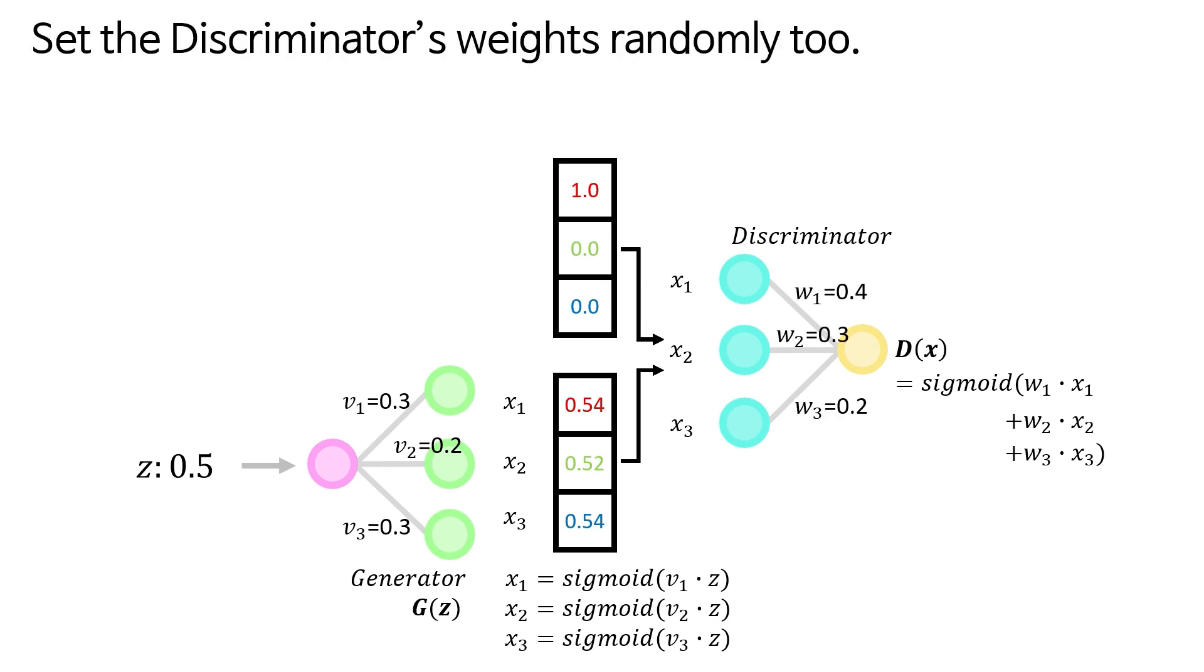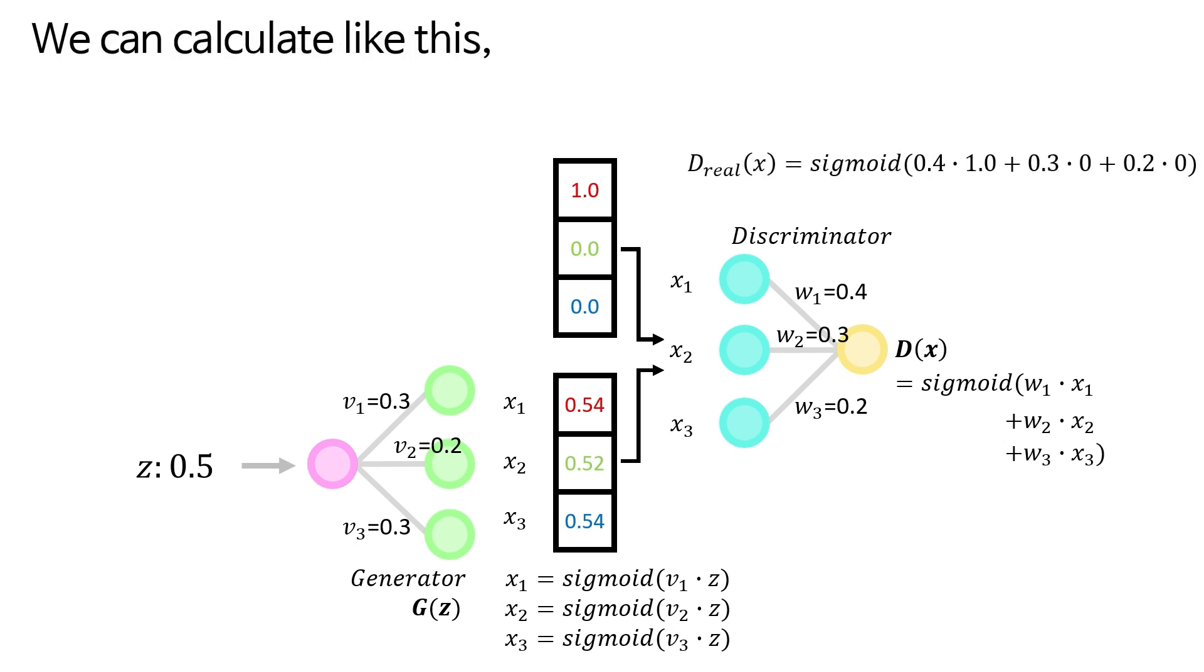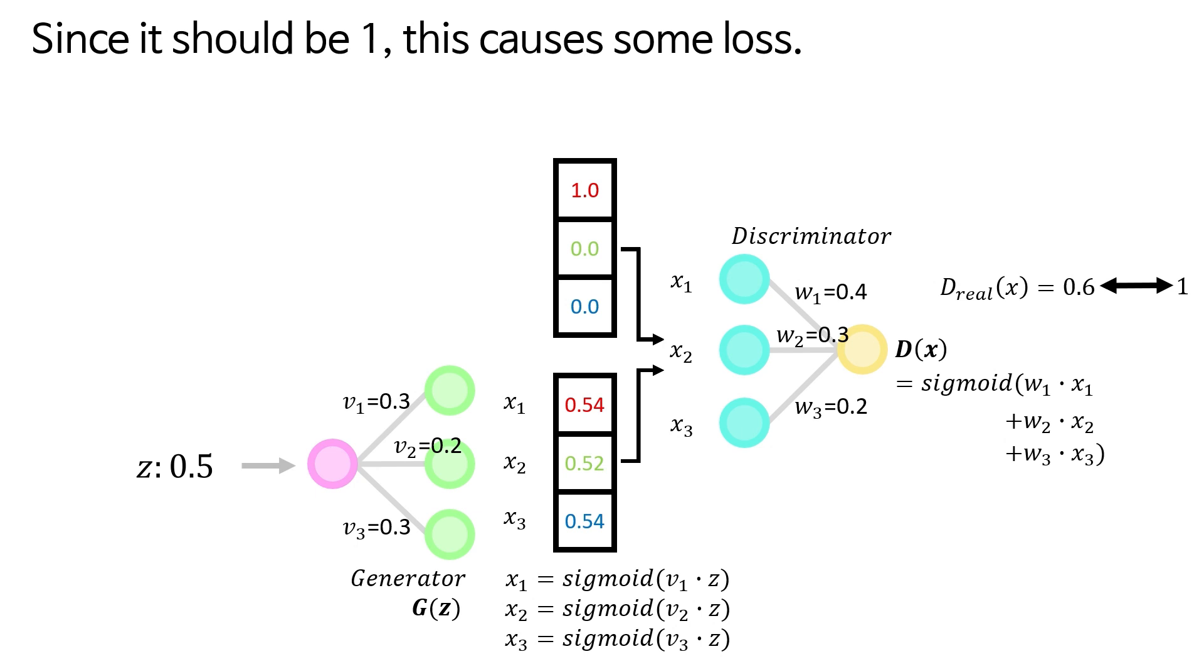Set the discriminator's weights randomly. If we input the real data as 1, 0, and 0, we can calculate like this, the output becomes about 0.6. Since it should be 1, this causes some loss.